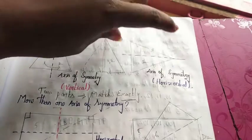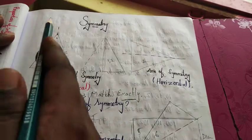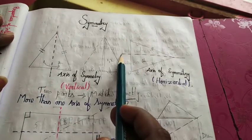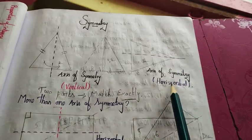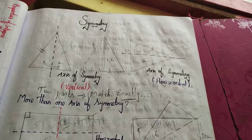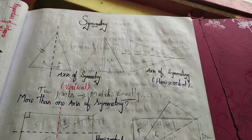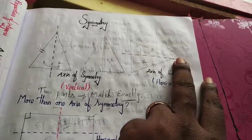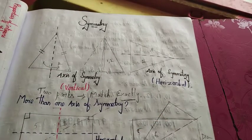We do this with a shape — it will be a vertical shape. If you match the figure, it will be a vertical line or it will be a horizontal line. If you match the line up and down, it will be a vertical line. And if you match the line left to right, it will be a horizontal axis.